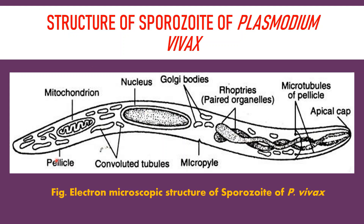The sporozoite is covered with a firm and elastic pellicle which maintains the definite structure of the parasite. The pellicle consists of three layers and contains longitudinally arranged microtubules, which may be responsible for the gliding movement of the body.